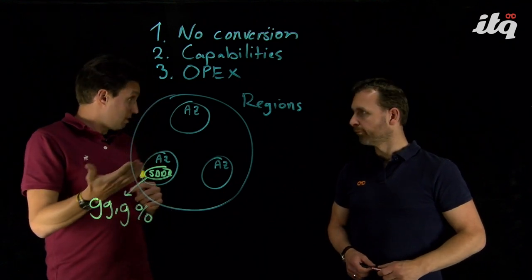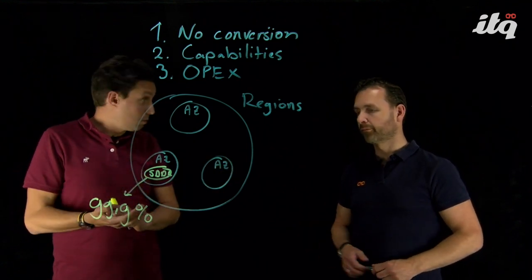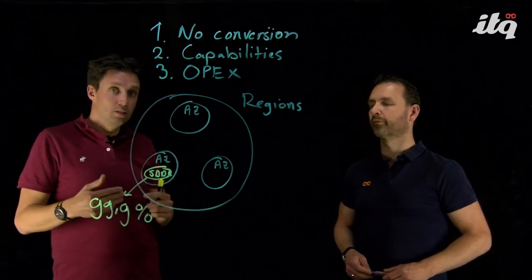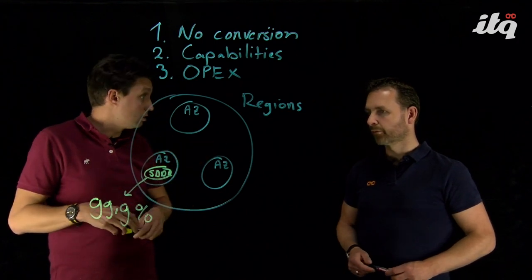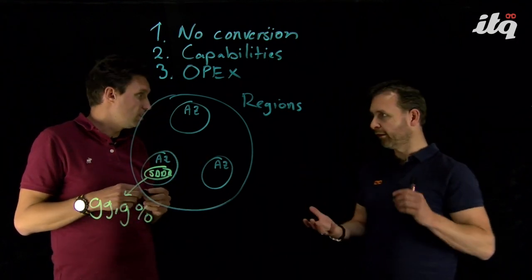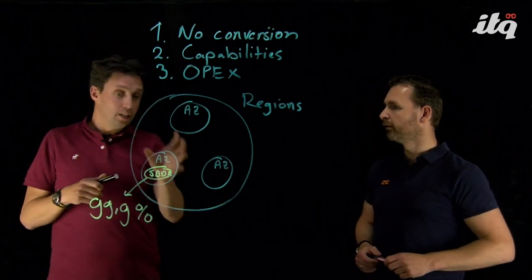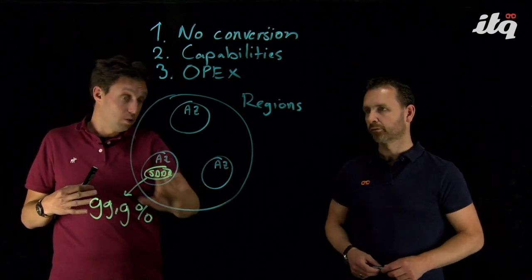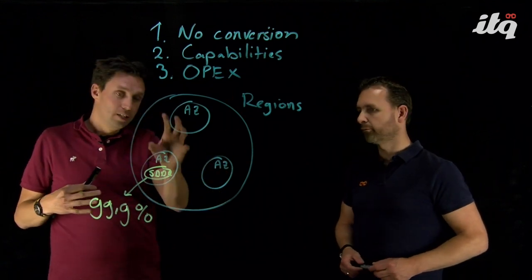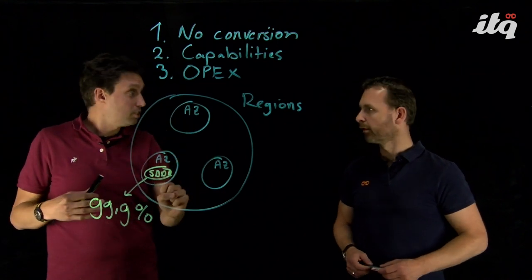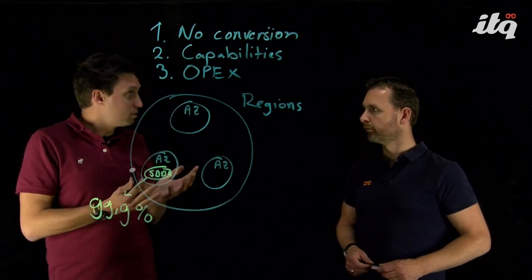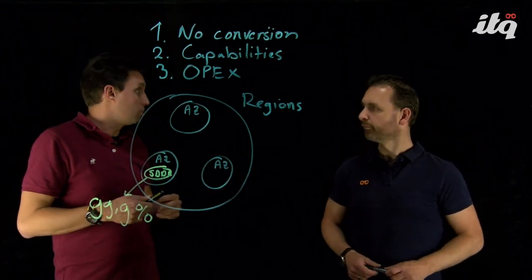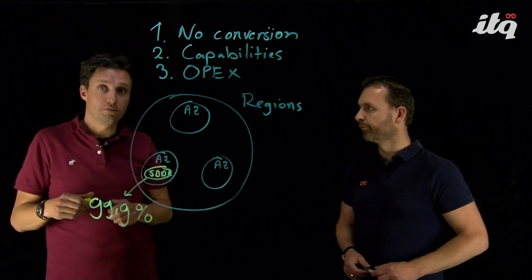So if you want to enhance availability, there might be a question. Then you have the option to stretch your SDDC to a second availability zone. Okay, because an availability, can I see this just like a physical data center? Well actually, an availability zone is a data center. And if you talk about Frankfurt, for example, these different availability zones or data centers are in the Frankfurt area. Okay, but they're all physically separated, isolated. About 30, 40 kilometers. It's the distance between those different availability zones.